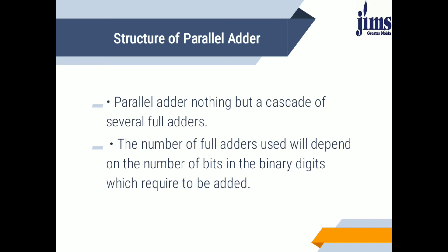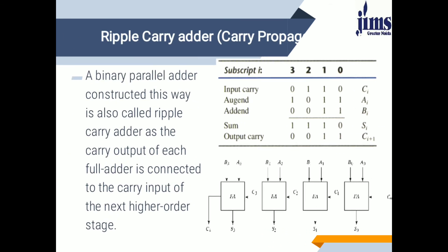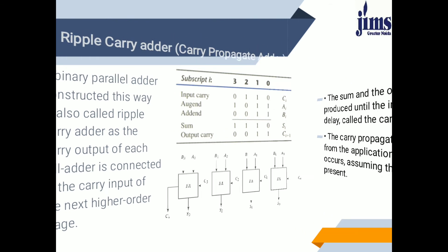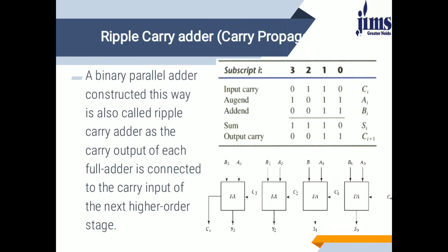The parallel adder is nothing but a cascade of several full adders. The number of full adders used depends on the number of bits in the binary digits to be added. A binary parallel adder constructed this way is also called a ripple-carry adder, as the carry output of each full adder is connected to the carry input of the next higher-order stage.